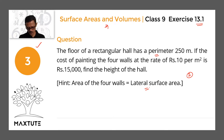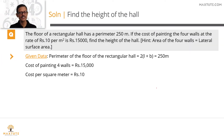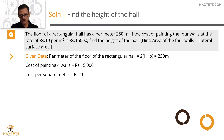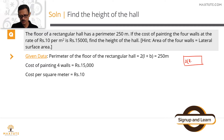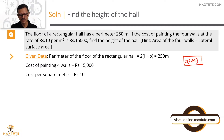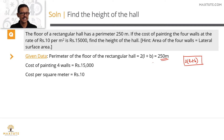Let's list down the data given to us. The floor of the rectangular hall is the shape of a rectangle. The perimeter of a rectangle formula is 2 times of L plus B, where L is the length and B is the breadth. That is given to be equal to 250 meters. So our first inference: 2(L + B) = 250 meters.